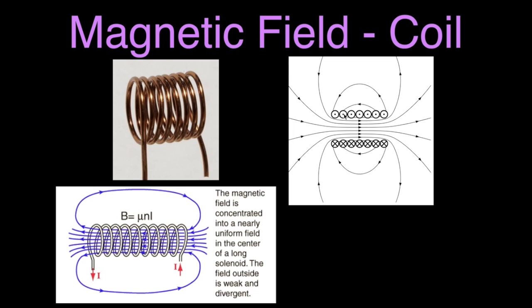Here are the currents — this shows the current coming out of the page and the current going into the page. That means that the magnetic field is running from left to right through that coil of wire. What I want to do now is go to the lab and show you how we can see the magnetic field from a coil of wire using iron filings and some compasses. Let's do that right now.